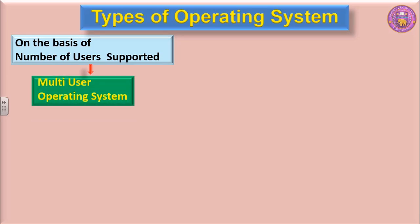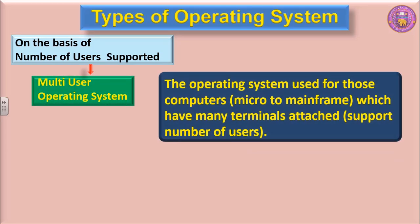The second category is multi-user operating system. This is the operating system used for those computers — micro to mainframe — which have many terminals attached and support a number of users. It means there is one computer which has an operating system, but it assists other computers to run with the same operating system.